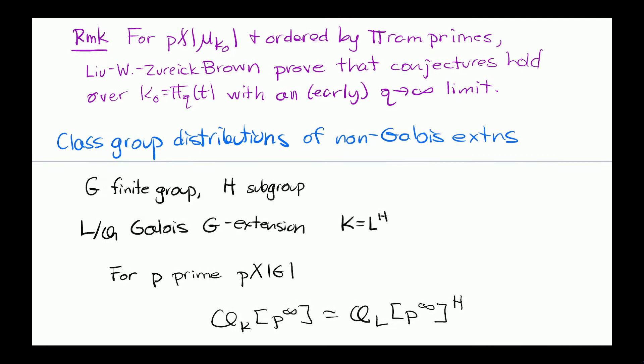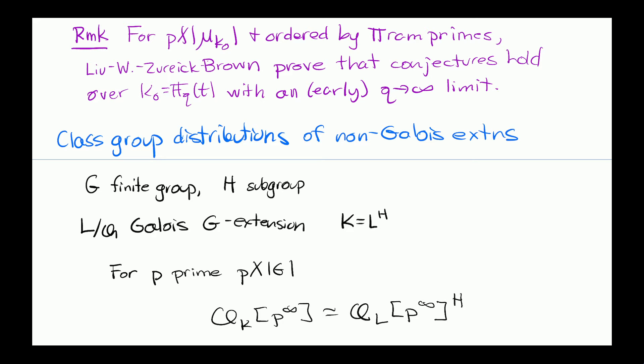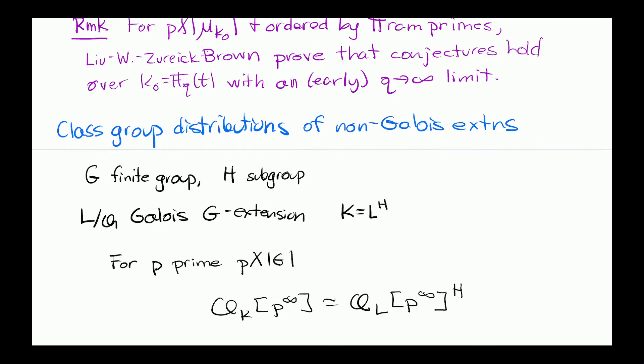For a prime p not dividing the order of G, in this setting the p-Sylow subgroup of the class group of K is simply the H-invariants of the p-Sylow subgroup of the class group of L — just as K is the H-invariants of L. The elements fixed by every element of H. This is shown in the notes, and the map is given for example by the inclusion of ideals from K into L.